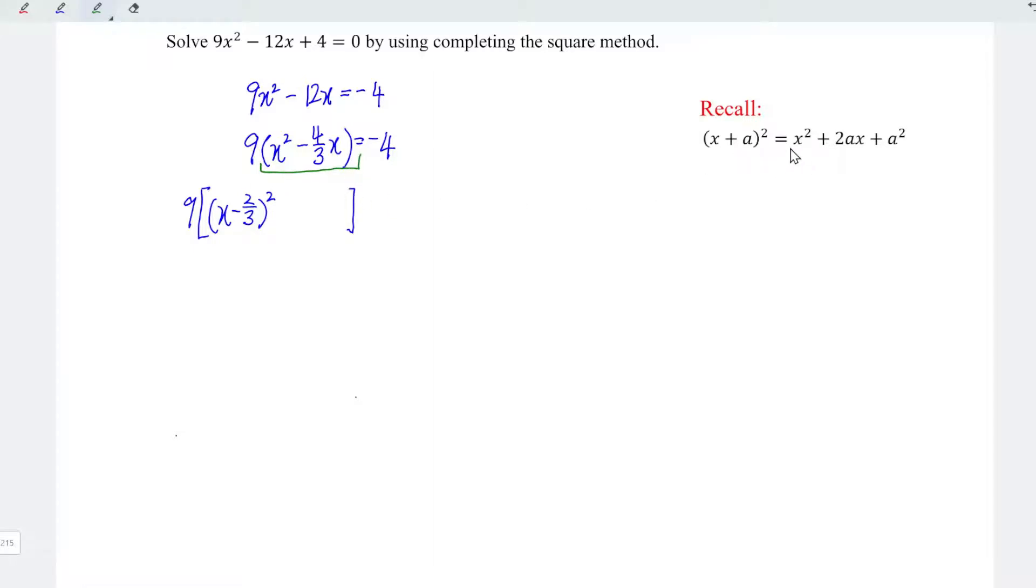But when we expand, we should have three terms. So this means that this is extra. To remove the extra term, very simple, we just have to minus.